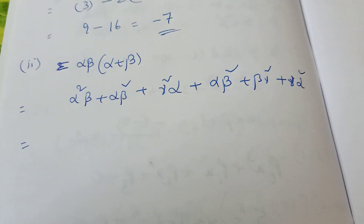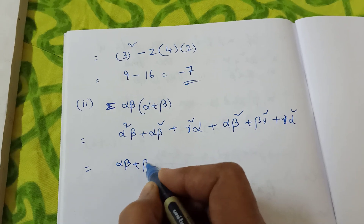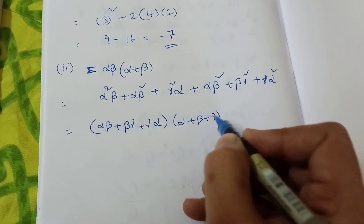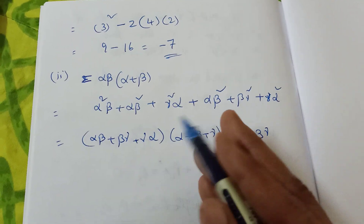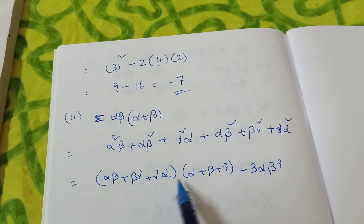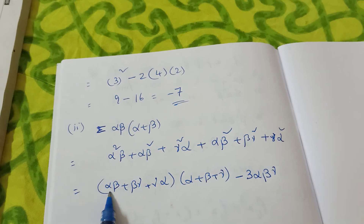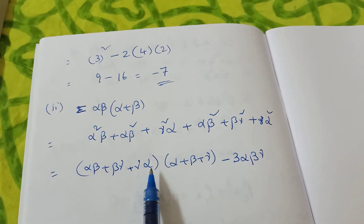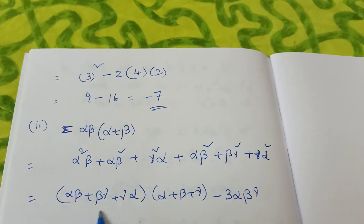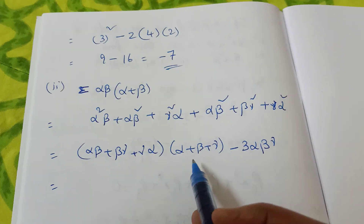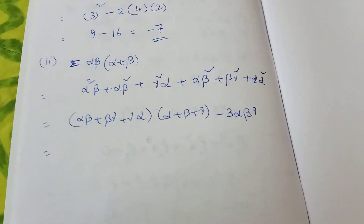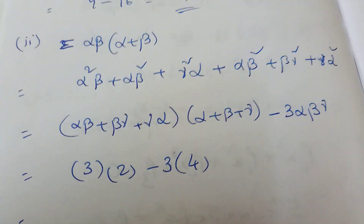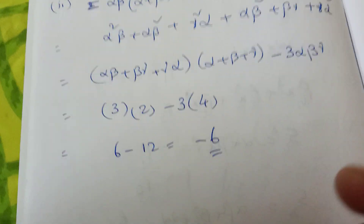Then here, how to write — see this step: (αβ plus βγ plus γα) into (α plus β plus γ) minus 3αβγ. This simplification gives us S2 times S1 minus 3·S3. We know S2 is 3, S1 is 2, S3 is 4 — so 3 times 2 minus 3 times 4 gives 6 minus 12 equals minus 6. The answer is minus 6.